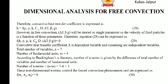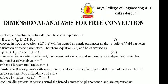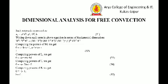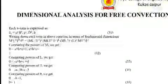Each pi term is written in terms of repeating variables and one non-repeating variable. The following repeating variables are selected for finding the pi terms: dynamic viscosity mu, thermal conductivity k, fluid density rho, and characteristic length capital D. Each pi term is expressed as pi 1, pi 2, and pi 3.